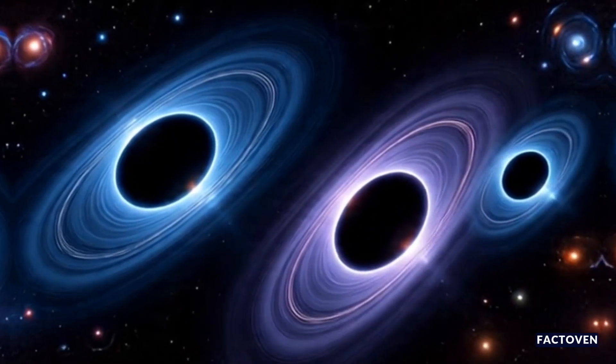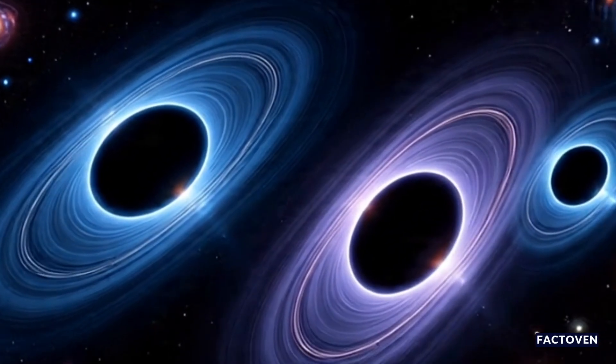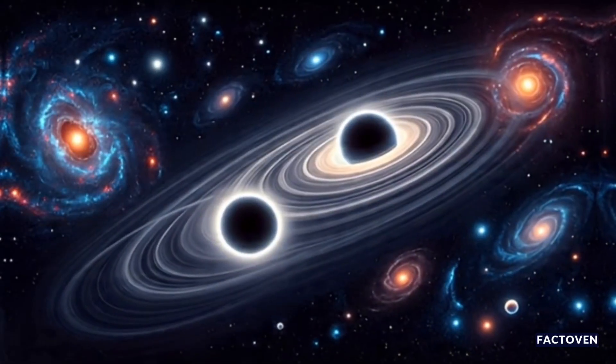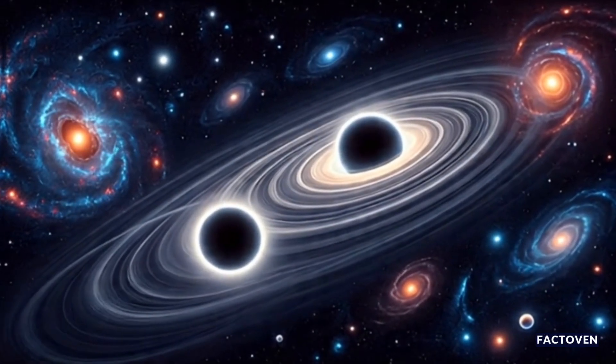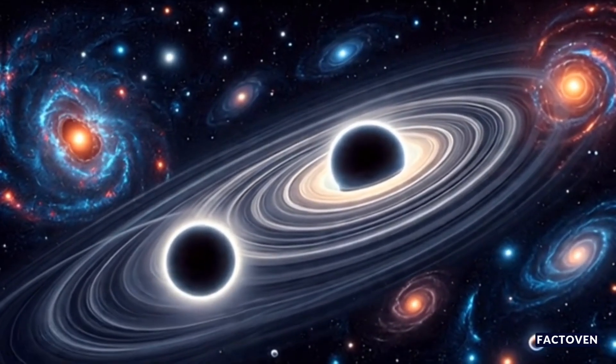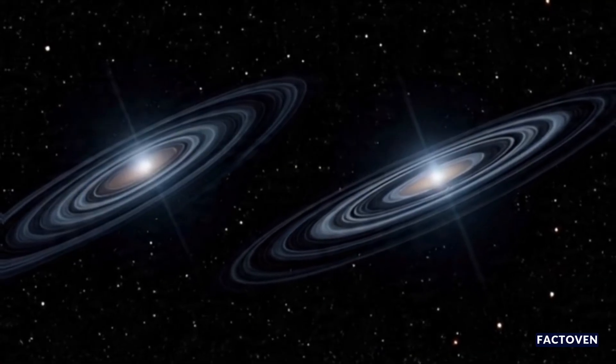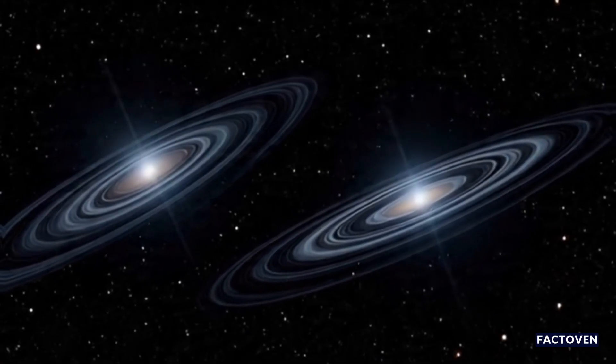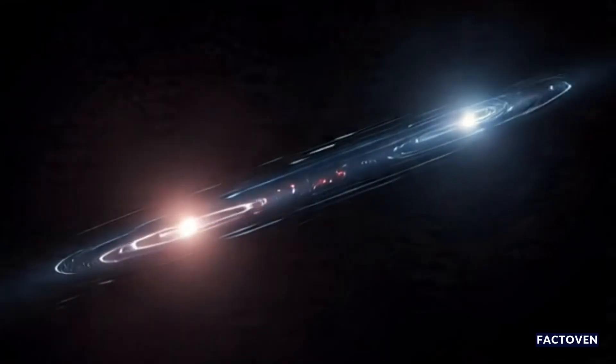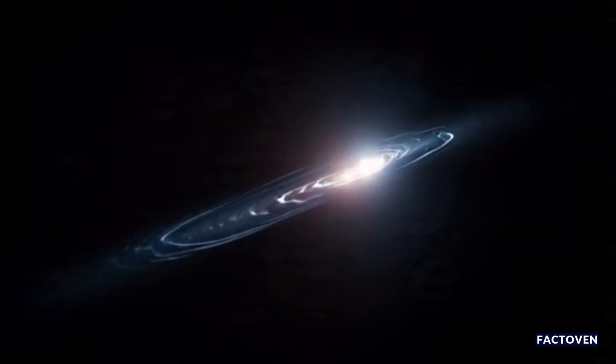In other words, GW190814 may not have been a simple merger. It might have been part of a cosmic trinary system. The scientists built a model to test this idea. If the pair were orbiting a third black hole, the gravitational waves would carry a subtle signal of that motion. And guess what? The data fit.